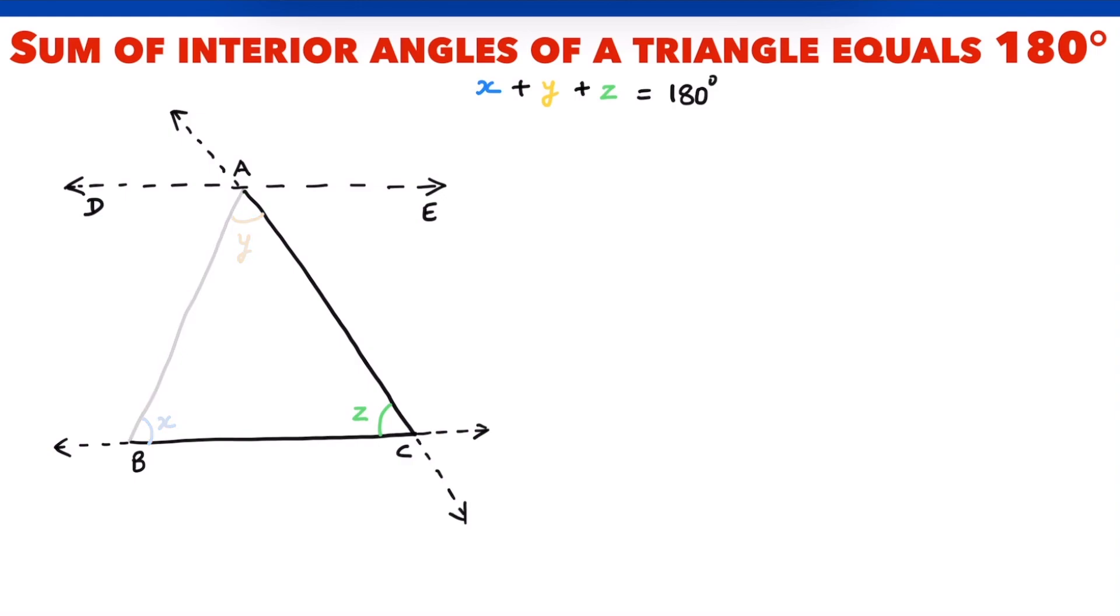What do we have now? DE is parallel to BC and AC is a transversal that intersects both DE and BC.